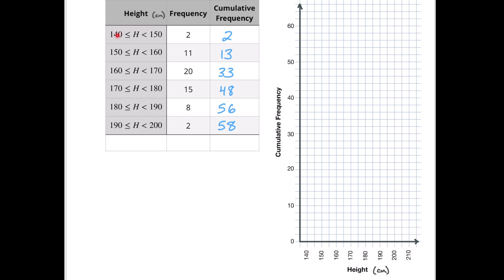Because we don't know what's fully happening in this class — we don't know where these two values are — we're going to start at 140. That's going to be our starting point on the whole graph, so we're going to put a value of zero at 140. Then at 150 we're going to have two people, because every line is two units. So there's our first point.